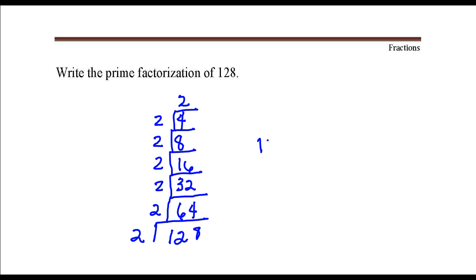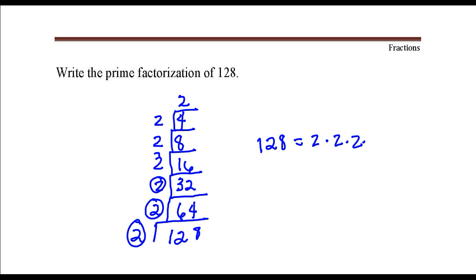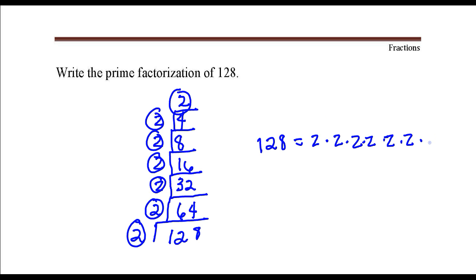The prime factorization of 128 is 2 times 2 times 2 times 2 times 2 times 2 times 2. Or, if you choose, you can write this as 2 raised to the 7th power, because there are 1, 2, 3, 4, 5, 6, 7 factors of 2.